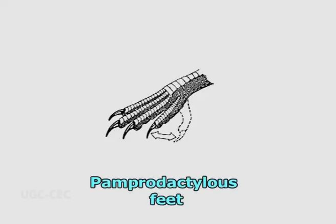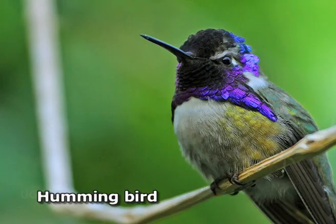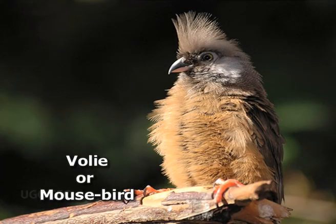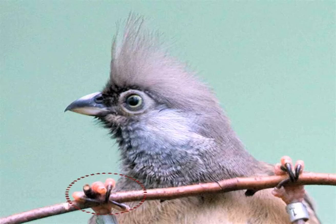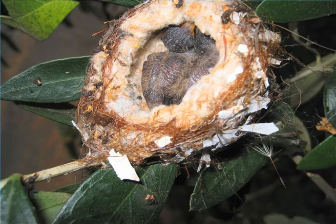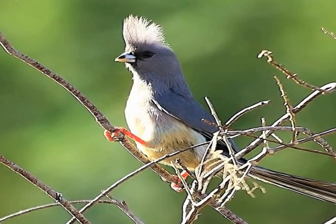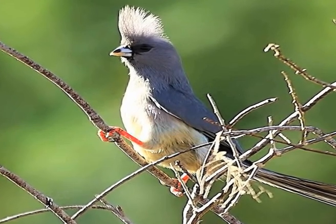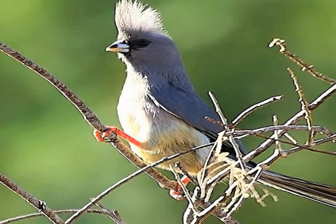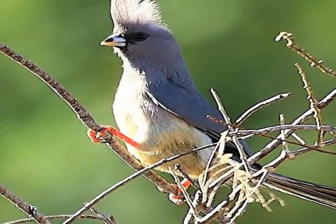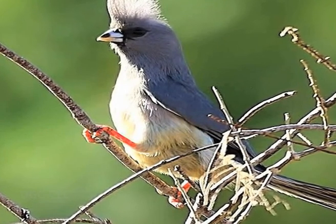Fourth is pamperodactylus feet. In swifts, hummingbirds, martinets, and colies or mousebirds, the hallux can be turned forwards so that all the toes point forward, enabling the birds to cling to steep cliff faces or under eaves of houses while they feed their young. These birds spend almost all their waking hours on the wing and almost never alight on the ground. Their hind limbs are reduced to the smallest possible size, barely strong enough to grasp a perch — a striking illustration of the effects of disuse on limb size.